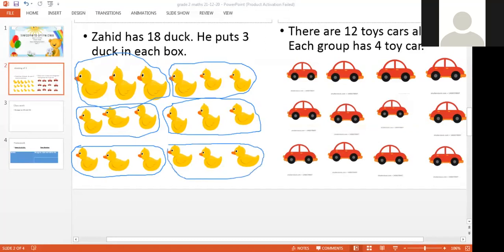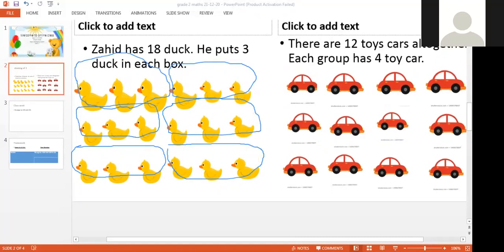So, as you all can see, how many boxes we have? These are six boxes. How many boxes we have? Eighteen. After that, what did we do? They said he puts three ducks in each box. Then we separated them. We started separating them. When we started separating them, we knew how many ducks in each box were. One, two, three. So, how many boxes we have?